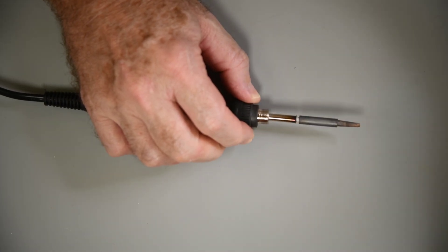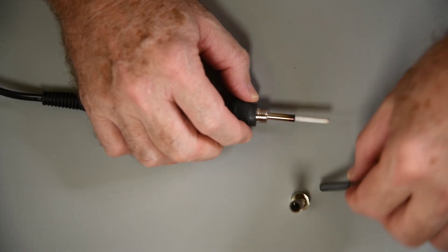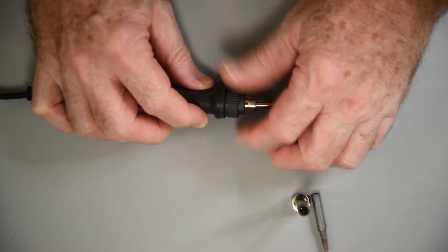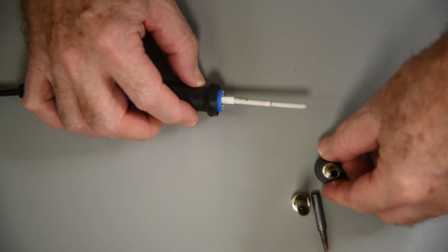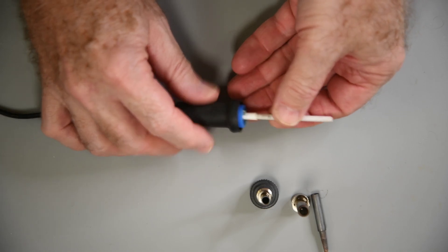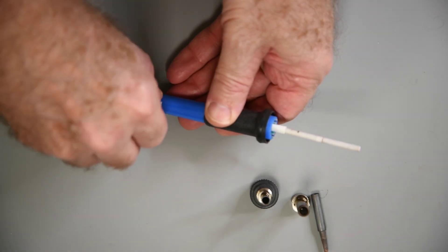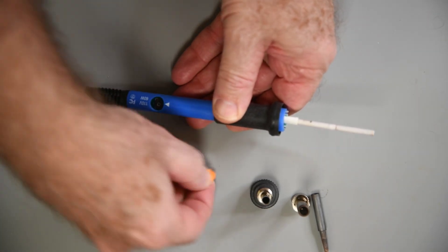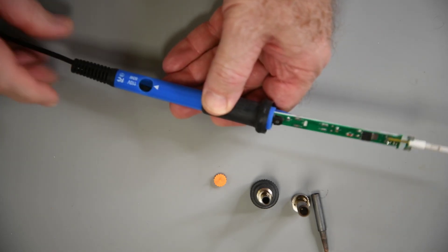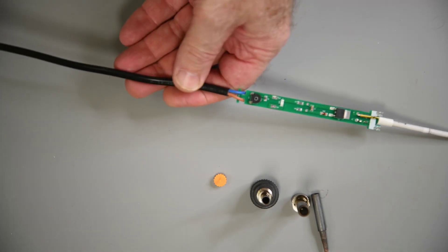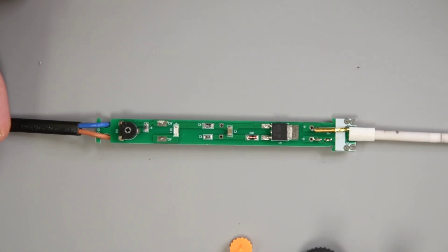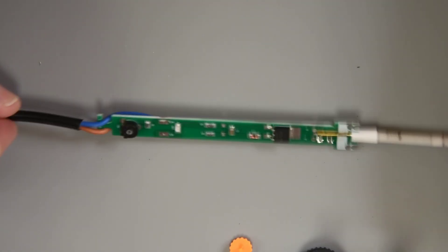It does come apart very easy. After removing the tip retainer and tip, the retainer mount unscrews from the front of the iron. The temperature adjustment knob just pulls off, and then the entire assembly pulls right out of the case. And there it is. It doesn't look like much, but it's $7.